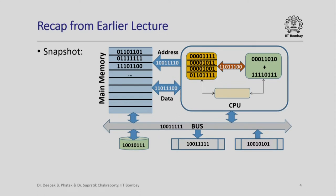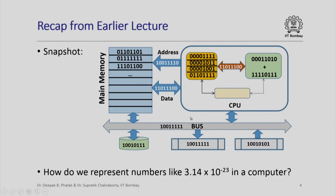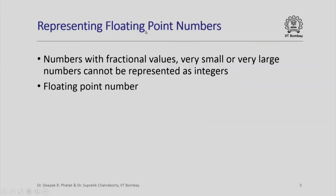This is the basic structure of our simple computer with different parts, and at any snapshot of operation of this computer you will see sequences of 0s and 1s everywhere. So what we want to ask is: how do we represent numbers like 3.14 or 10 raised to -23 in a computer using sequences of 0s and 1s? These are called floating point numbers — numbers with fractional values, very small numbers or very large numbers that cannot be represented as integers. We want to understand how such a number can be represented in a computer using a sequence of 0s and 1s.